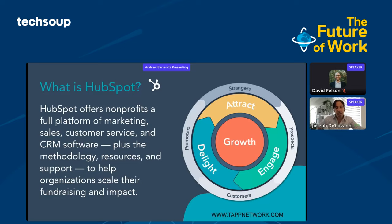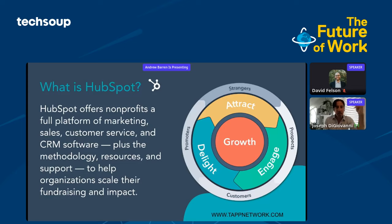What is HubSpot? HubSpot used to go by a funnel model — top funnel, mid funnel, bottom funnel — in terms of driving awareness, engagement, and conversion. They've since moved to a flywheel. What HubSpot does with all your donors is help you attract them into your funnel, to your website, engage them through different pieces of content, and ultimately delight them to the point where they take action. You can start with strangers — folks who aren't aware of your nonprofit — have them become prospects in your database, then customers (in this case donors and large funders), and ultimately promoters or advocates.